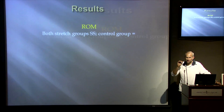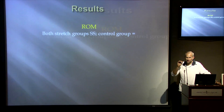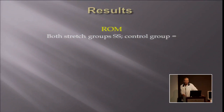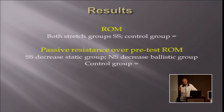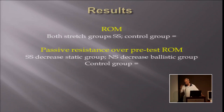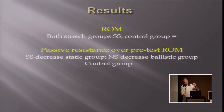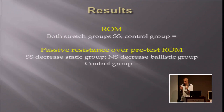Concerning the range of motion: the control group had no statistical effect on muscle length. However, both stretch groups did increase their range of motion — so that is a good thing. Now, when we look at the passive resistance over a certain range of motion, we found a statistically significant decrease in the static group, while we did not find this in the dynamic group — although in the dynamic group we found a difference, it was not statistically significant. So in the static group, something is happening in the muscle-tendon unit, though we don't yet know if it's the muscle or the tendon.